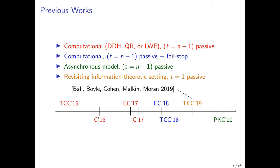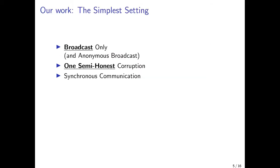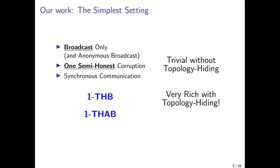This work, in many ways, laid the foundation for our own. So what we're doing, in a sense post-modern THC, is all about trying to deconstruct it and understand the core difficulty of it by stripping it down to the very minimalistic setting. We'll consider only the simplest of functionalities of the broadcast type and only the simplest kind of adversaries, a single semi-honest corruption, which honestly is almost not adversarial at all. So I'll be using the abbreviation 1-THB and 1-THAB in the sequel to denote topology-hiding broadcast and anonymous broadcast against one semi-honest corruption.